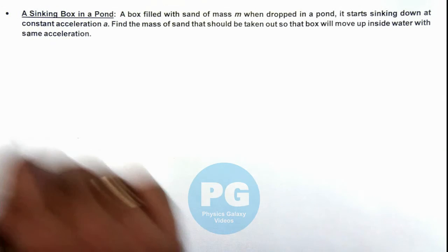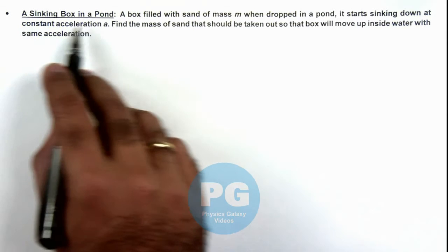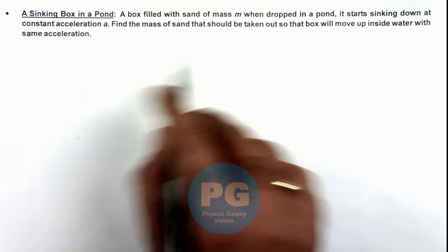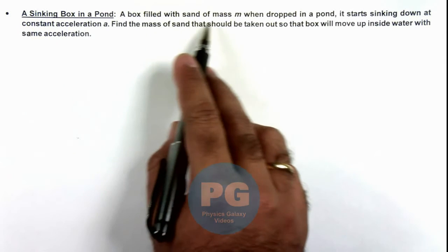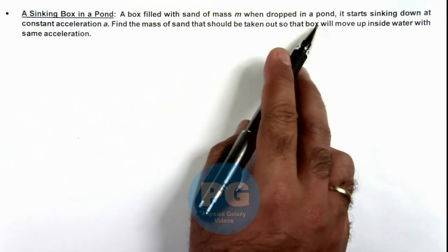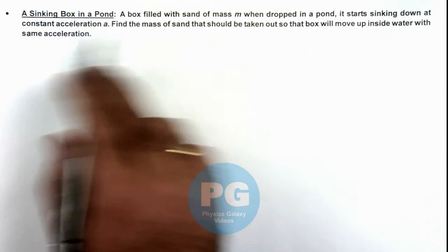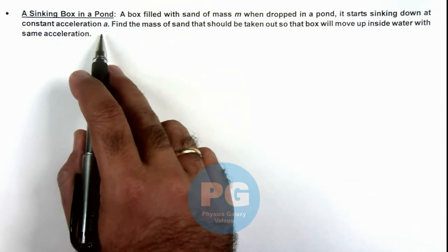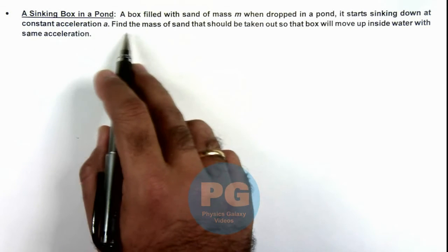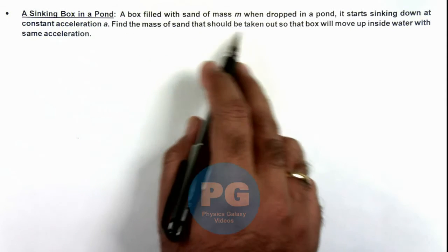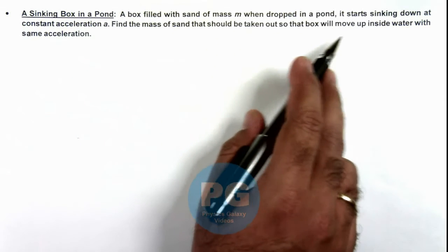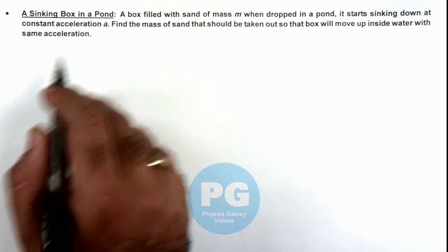This illustration is about a situation of a sinking box in a pond. We are given that a box filled with sand of mass m, when dropped in a pond, starts sinking down at constant acceleration ay. And here we are required to find the mass of sand that should be taken out so that the box will move up inside water with same acceleration.